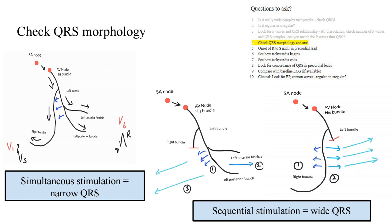Before going into the differences in morphology between ventricular tachycardia and SVT with aberrancy, it's important to first understand why the morphology is normal in a normal person with a narrow QRS, and why it is aberrant in bundle branch blocks. In a normal person, an impulse travels from the SA node to the AV node and down the HIS-Purkinje system, and the stimulation of both the left and right ventricles is simultaneous. This simultaneous stimulation leads to a narrow QRS. The blue arrows indicate septal depolarization, which always occurs from left to right in a morphologically normal heart.